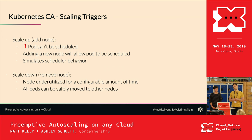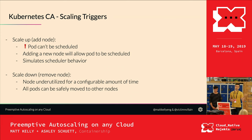For scale-down, it's simpler. It looks at nodes that are underutilized for a configurable amount of time — the default is 10 minutes. It also checks if all pods running on that node can be safely evicted, meaning safely rescheduled on a different node.